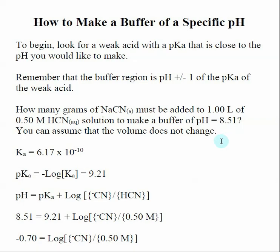Because we often use buffers in laboratory situations, it's very important to learn how to make a buffer of a specific pH. We understand that the buffer region is when the pH is plus or minus one of the pKa, so our buffer doesn't necessarily have to have its pH equal to the pKa of the weak acid.